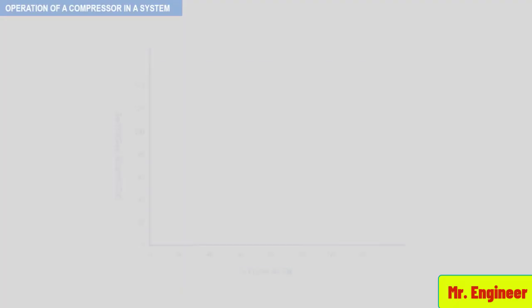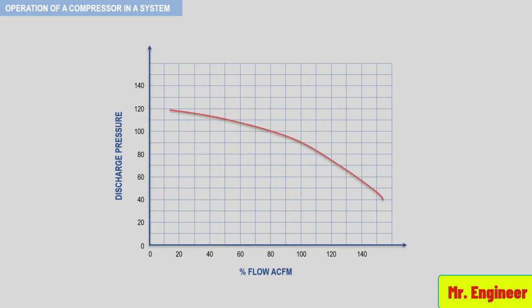Take a look at the following figure. The first curve shown is called the compressor curve — it shows the head produced by the compressor as a function of flow. This curve corresponds to a dynamic compressor since it shows a decreasing head for an increasing flow. The second curve is the system resistance curve, in other words, the head required by the process system as a function of the compressor flow. In this example, this second curve intersects the compressor curve at the design point corresponding to 100% flow.